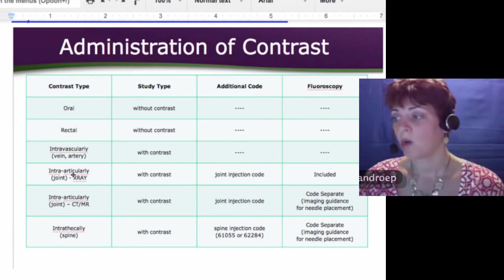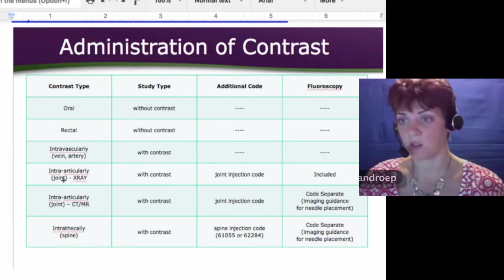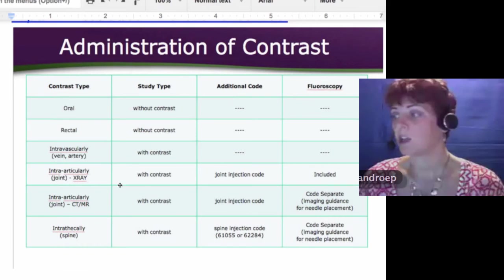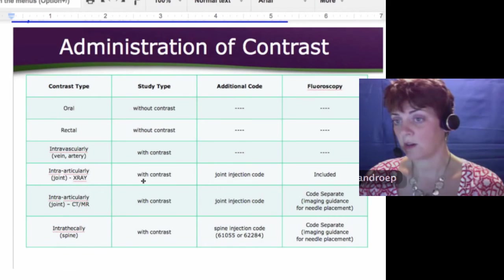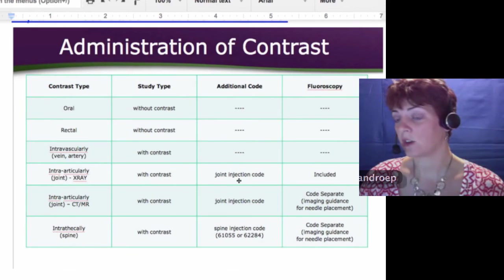Intra-articularly, where they do an x-ray of the joint to get that needle in just right, you get to code a with contrast code, one of the indented ones, and you get to code a joint injection code, but the fluoroscopy is included, you can't bill that separate.